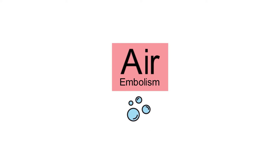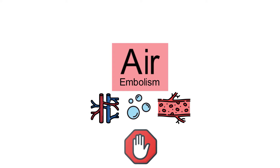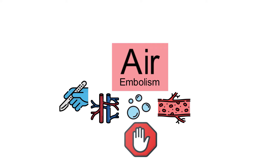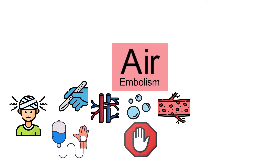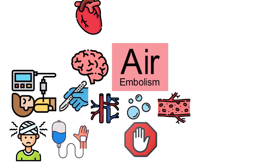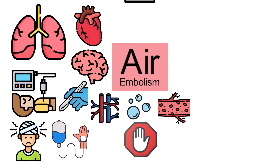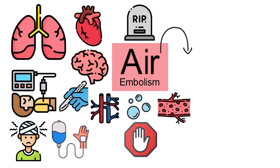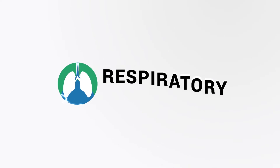An air embolism occurs when one or more air bubbles enter a vein or artery and block it. This can happen in various contexts such as during surgical procedures, with intravenous lines, or as a result of trauma or certain medical interventions. The embolism can travel to the brain, heart, or lungs, causing serious and potentially life-threatening complications, which is what we're going to discuss in this quick video.